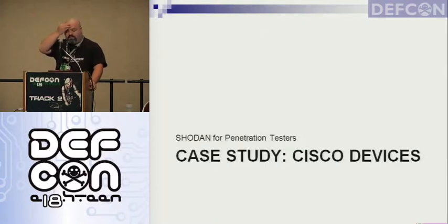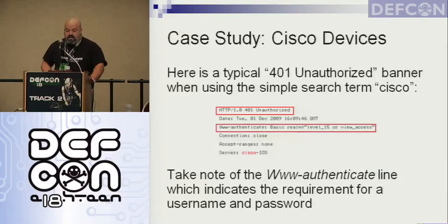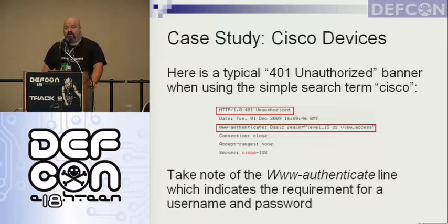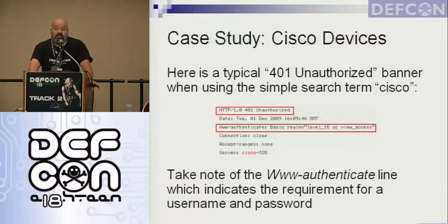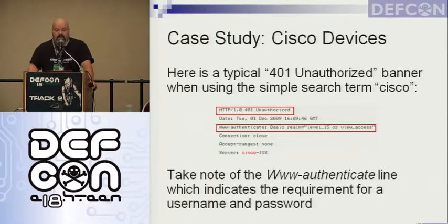The first of my four case studies is Cisco devices. This is the first Cisco banner I found, shown as an example. The two boxes highlighted in red show: first, the status code — HTTP 401 Unauthorized — and then we see 'WWW-Authenticate: Basic realm=Level 15 or view access.' When you see this and click on the result, you're going to get a pop-up box asking for a username and password, and if we don't have it, we can't get to that page.